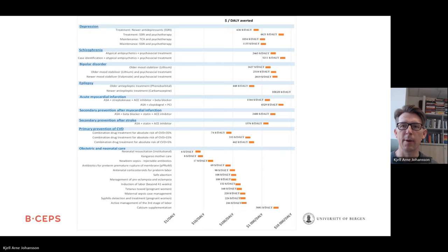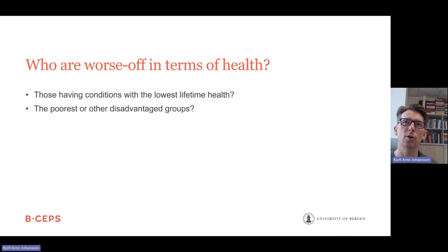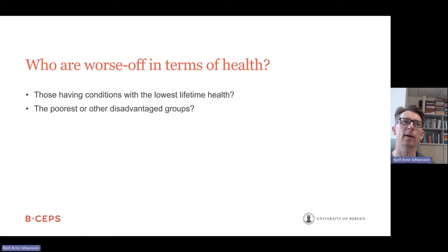However, health maximization is ignorant to the distribution of benefits — who actually gets them. It may be problematic to say no to mental disorders; some, like schizophrenia, occur early in life, and we should have a higher willingness-to-pay threshold for these. So who are the worst-off in terms of health? We now move to giving priority to the worst-off principle, or egalitarianism. It could be a univariate measure — those having the lowest lifetime health — where schizophrenia may be an example of a very severe condition.